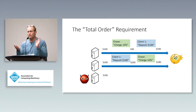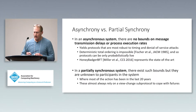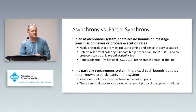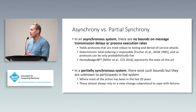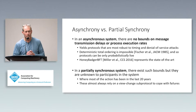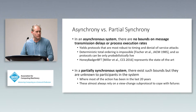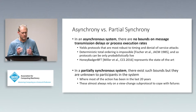There are different axes along which the community has explored protocols to ensure this total order requirement. One axis is the system model, typically separated into two classes: asynchronous and partially synchronous. In an asynchronous system there are no bounds on message transmission delays or process execution rates — you send a message and know it will arrive, but have no idea how long it will take. This yields protocols most robust to timing and denial-of-service attacks.